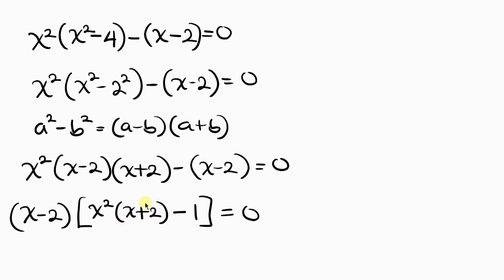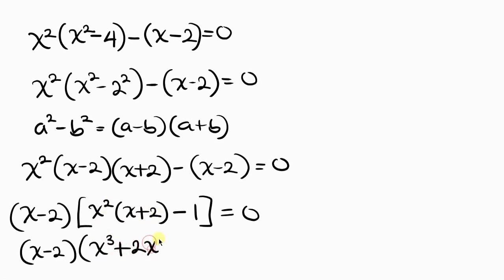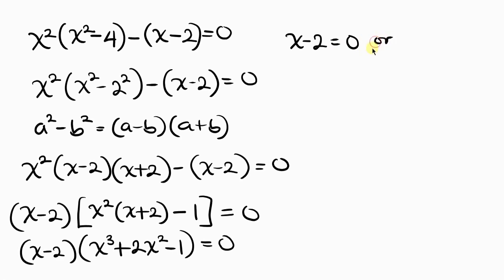Opening up the bracket, this becomes (x minus 2) times (x cubed plus 2x squared minus 1) equal to 0. So we have two cases: the first case is x minus 2 equals 0, or the second case is x cubed plus 2x squared minus 1 equals 0. We're going to be solving these cases one after the other.